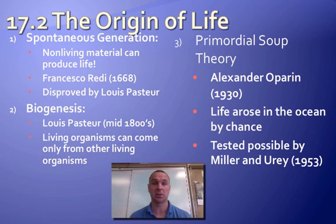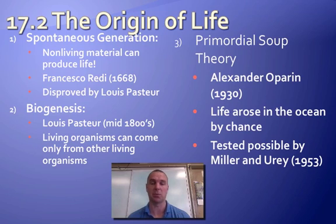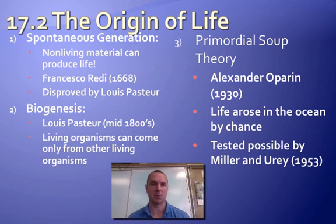The first theory is spontaneous generation, which basically says living things come from non-living things. We think that's totally crazy today, but a long time ago, when it rained, they saw a lot more frogs than normal, so they thought frogs came from raindrops. When they left meat out on the counter, maggots would form. If you had a mud puddle, after a few days you'd see tadpoles or mosquito larvae starting to grow in it.